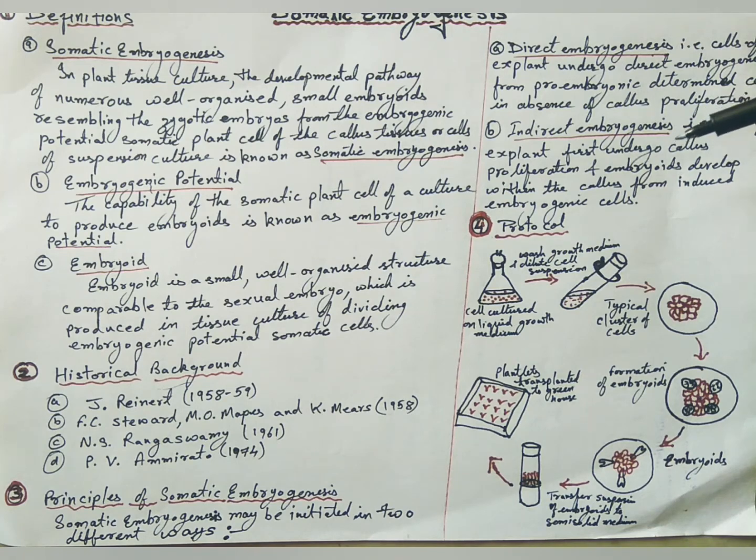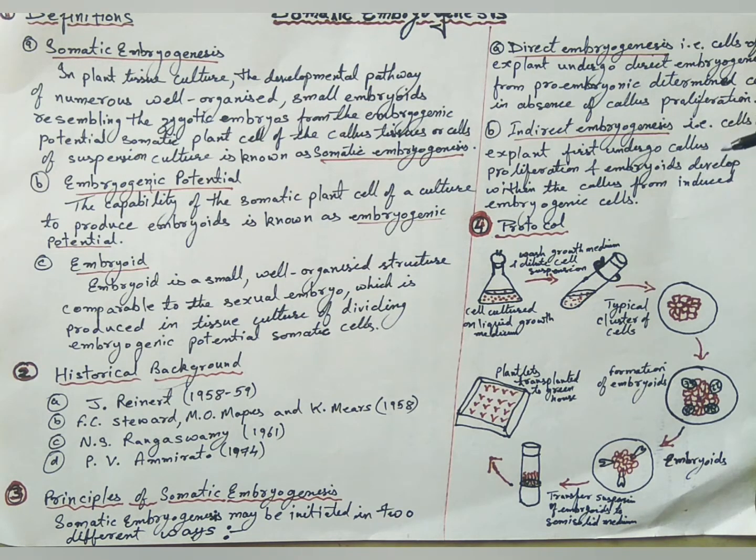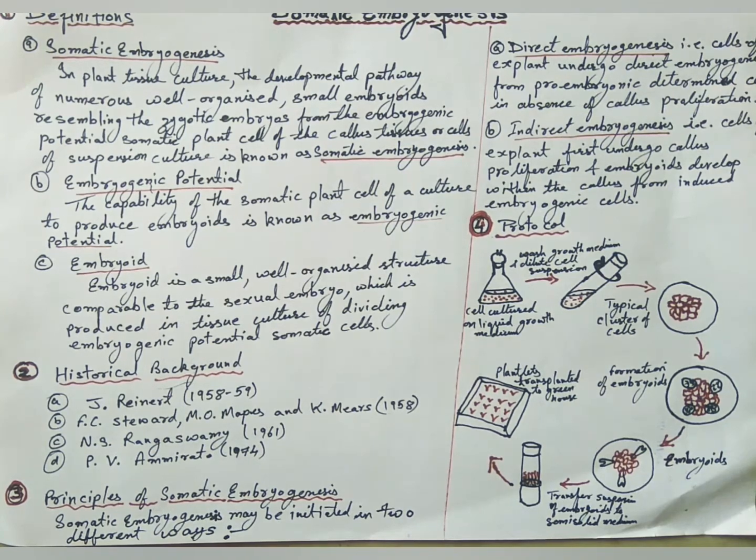The second type of somatic embryo development needs some prior callus formation, and embryos originate from induced embryogenic cells within the callus tissues.